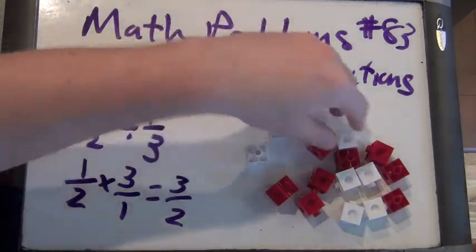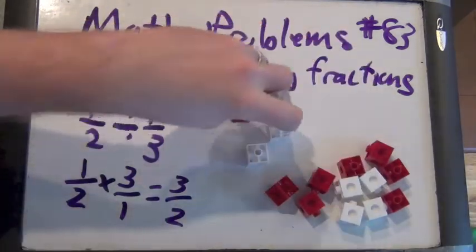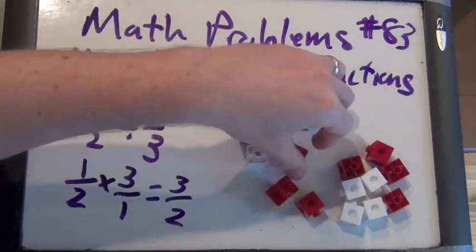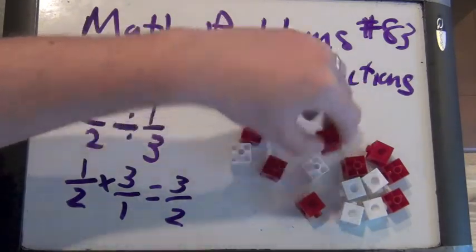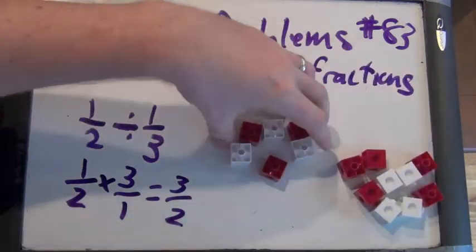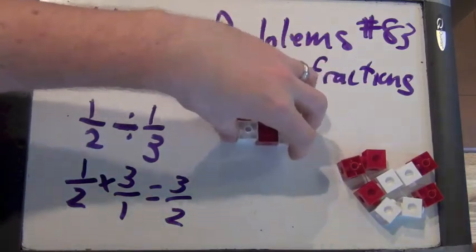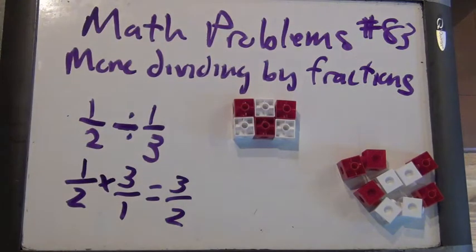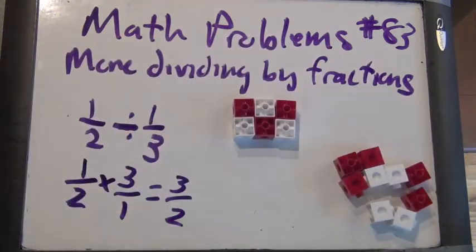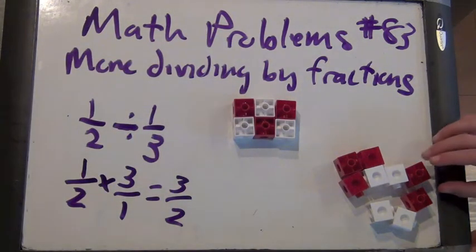So I'm going to build a rectangle that has 6 blocks in it, or 6 snap cubes. I'm not going to do it super well, but here we go. So here's my little rectangle. Do you see it? It has 6 blocks. Can you, out of these blocks, show me what 1 half of that rectangle is? How many blocks is that?